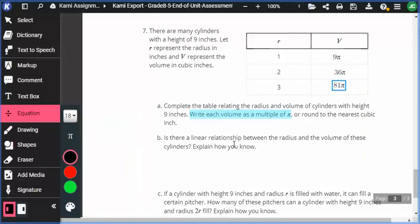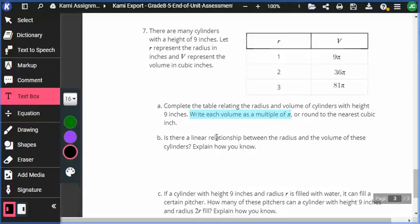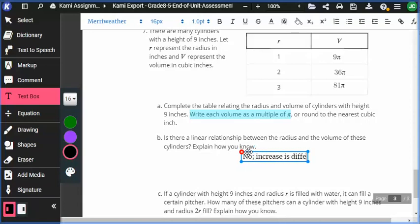Is there a linear relationship between the radius and volume? Is this information going up by the exact same amount each time I increase the radius by one? If I go from nine to 36 pi and then from 36 to 81 pi, is that the same amount each time? That's not. Nine pi to 36 pi is an increase of 27. And then 36 to 81, that's an increase of 45. So the increase is different each time. This is not a linear relationship.